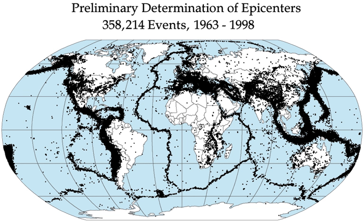Earthquakes often occur in volcanic regions and are caused there both by tectonic faults and the movement of magma in volcanoes. Such earthquakes can serve as an early warning of volcanic eruptions, as during the 1980 eruption of Mount St. Helens. Earthquake swarms can serve as markers for the location of the flowing magma throughout the volcanoes. These swarms can be recorded by seismometers and tiltmeters and used as sensors to predict imminent or upcoming eruptions.